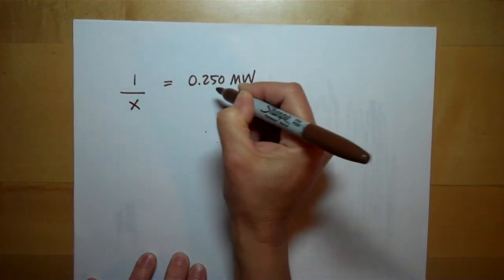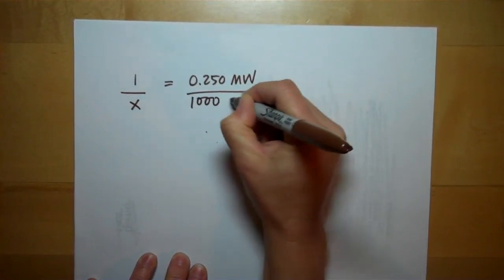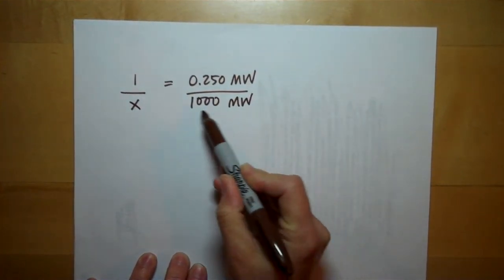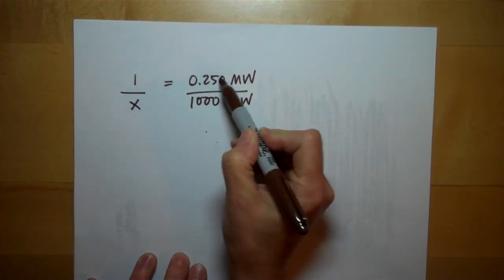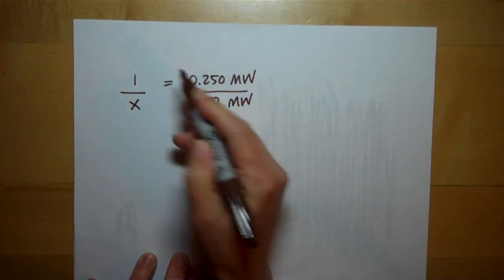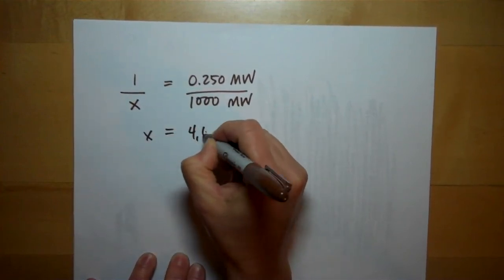Do your cross multiplying, which would be 1,000 divided by .25, X comes out to 4,000.